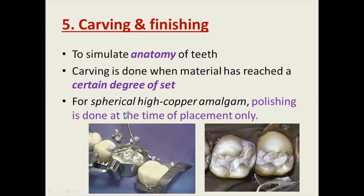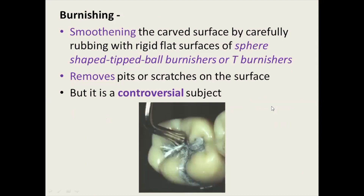For spherical high copper amalgam, polishing is done at the time of placement only. Burnishing is the smoothing of carved surfaces by carefully rubbing with a rigid flat surface of spear-shaped tipped ball burnishers or T-burnishers. You must apply very gentle pressure to remove scratches on the surface created by carving, moving the burnisher from the restoration towards the tooth. This is a controversial subject because excessive pressure during burnishing may increase heat which could be detrimental to the pulp.